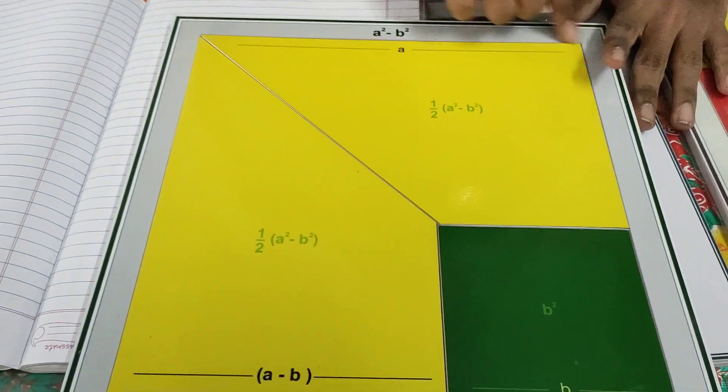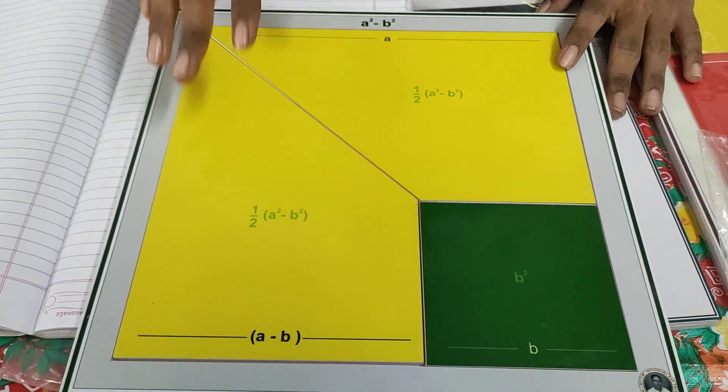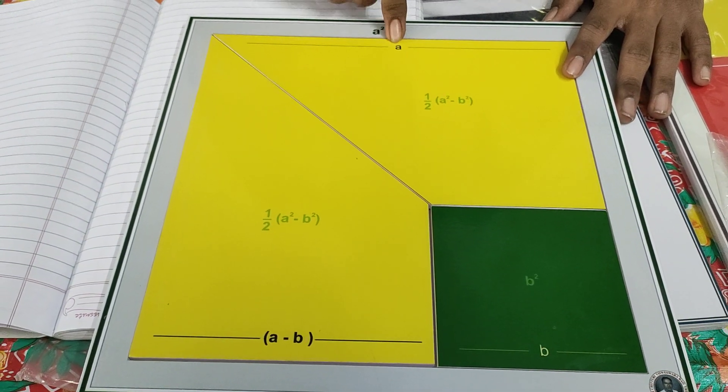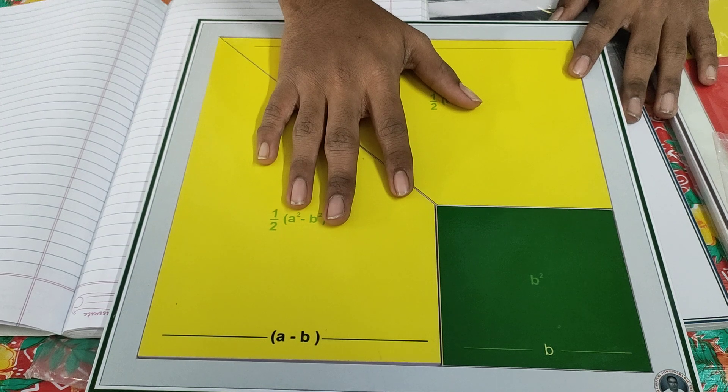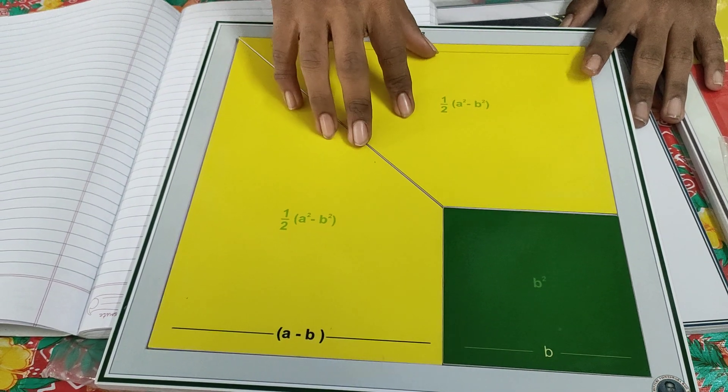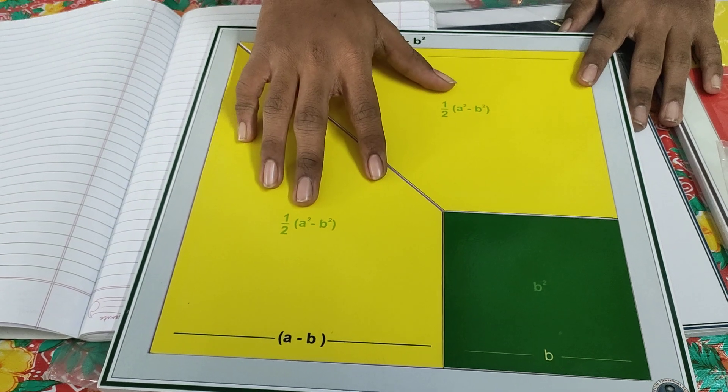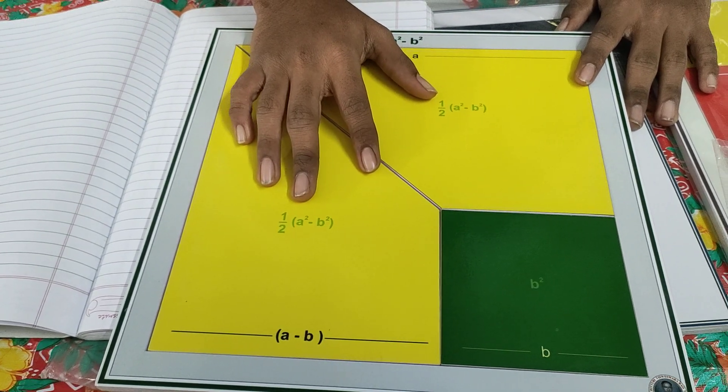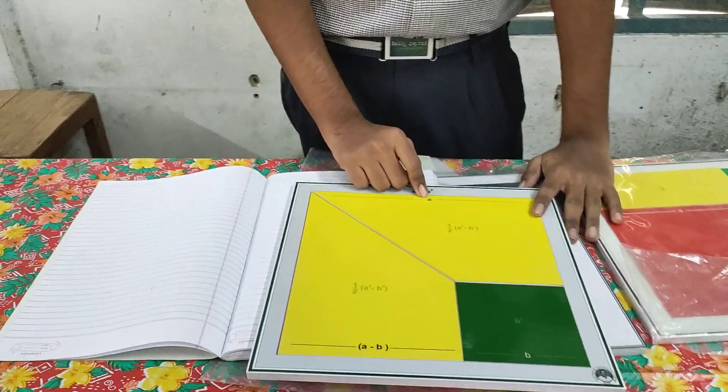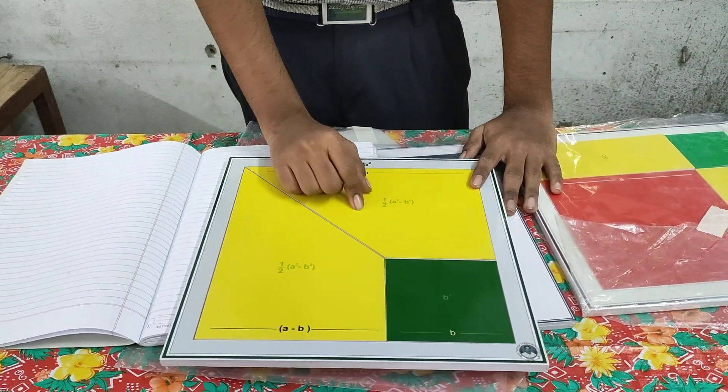As you can see, this whole model is a square with side length a, so we call it a square. If you want to find the area of this square, we need the formula: area equals side times side. Since the side is a, we get a times a, which is a².